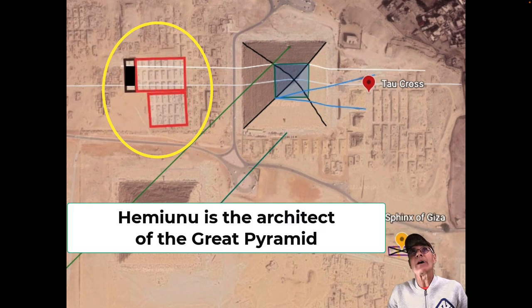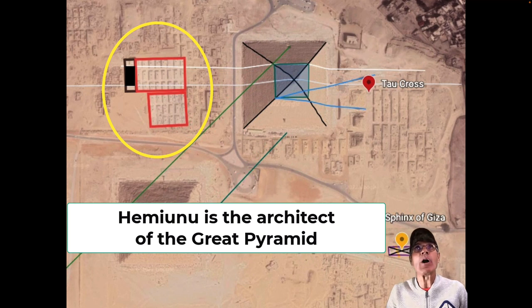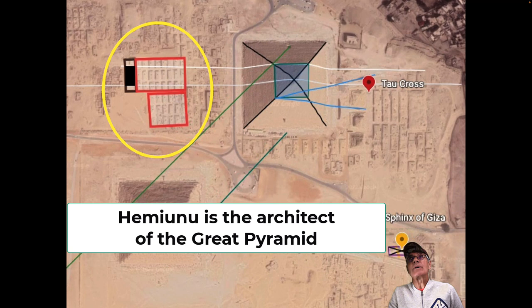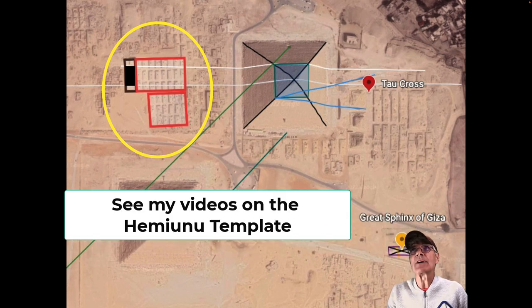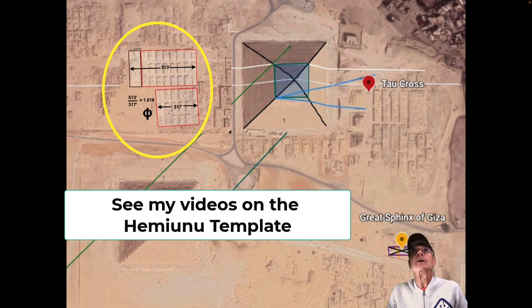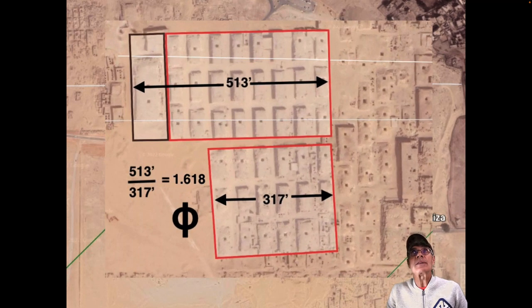That's the tomb of Hemiunu. You can see that the parallel white lines that come off of the Hemiunu tomb there go right through the center of the Great Pyramid and through the Hemiunu template in blue there. Let's take a closer look at that.